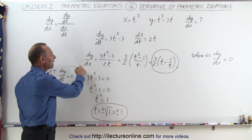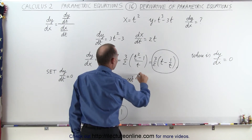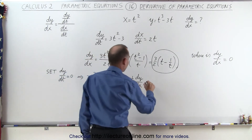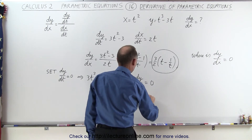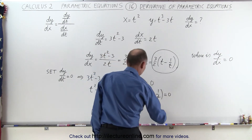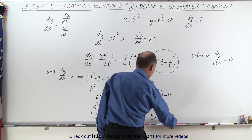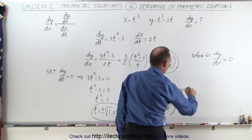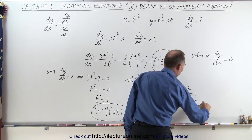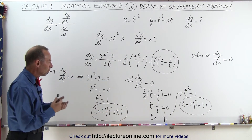We could have also done that by setting dy/dx equal to 0, since that's the derivative of y with respect to x. So setting dy/dx equal to 0: we have 3 over 2 times t minus 1 over t equals 0. Dividing both sides by 3 over 2, we get t minus 1 over t equals 0, or t equals 1 over t. Multiplying both sides by t, we get t squared equals 1, so t equals plus or minus 1. We get the exact same values for t, confirming where the function has zero slope.